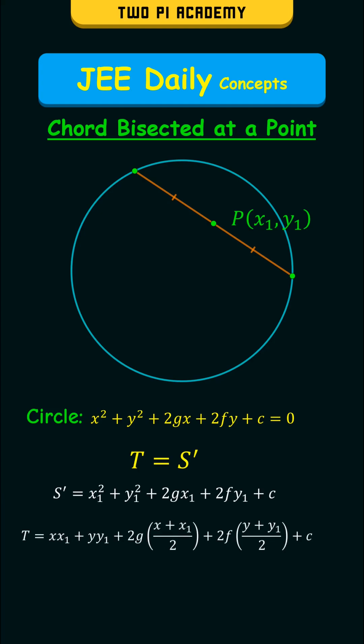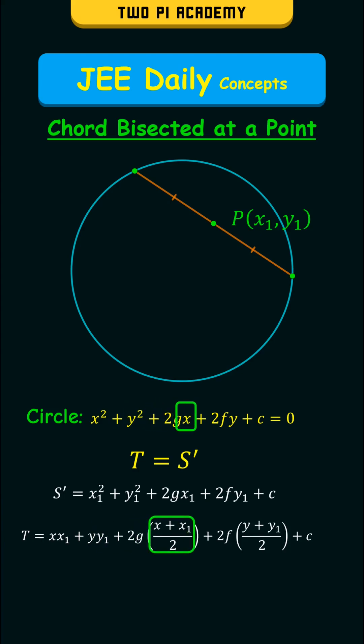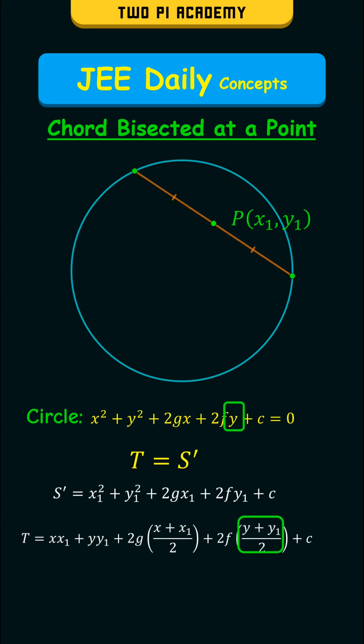T is the expression obtained from the equation of the circle by replacing x² with x·x1, y² with y·y1, x with (x + x1)/2, and y with (y + y1)/2 respectively.